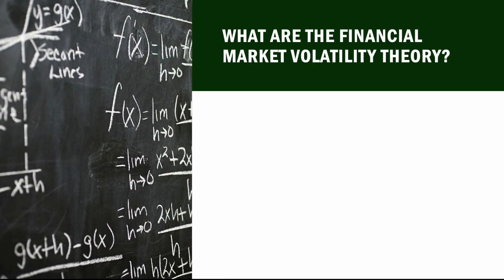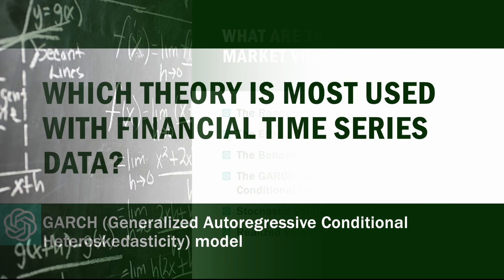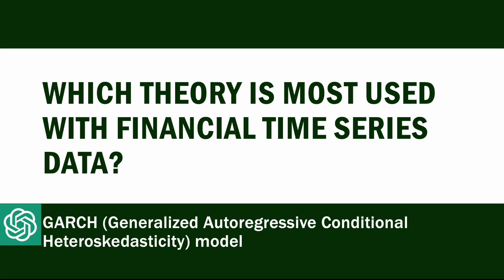We then asked what volatility theories are available in respect to financial markets, since our research problem must be based on a scientific theory. ChatGPT answered with several volatility theories. When we asked which theory is most preferred and most used with financial time series data, ChatGPT answered that it is the GARCH model — Generalized Autoregressive Conditional Heteroscedasticity model.